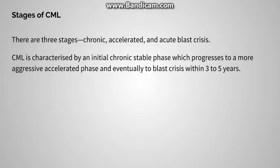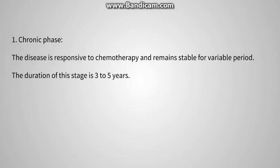Going to the stages: there are three stages — chronic, accelerated, and blast crisis. Mostly patients enter the chronic phase, then progress to the accelerated phase, and lastly to blast crisis. In the chronic stage, symptoms are vague, the disease is responsive to chemotherapy, the patient is much more stable, and the duration of this stage is around three to five years.